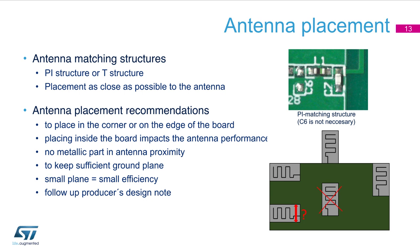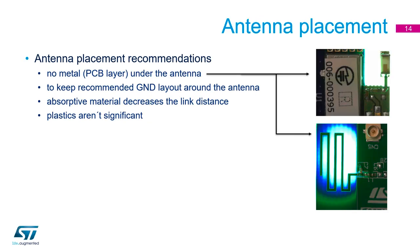A small ground plane or small PCB significantly impacts the efficiency of the antenna. It is best to keep the layout of the manufacturer. But be careful — under the antenna there must not be any metal, meaning PCB layers. Also, around the antenna space must be preserved for negligible impact. The antenna has to have enough space for radiation. Take care about absorptive materials close to the antenna, as they cause attenuation and decrease the range of the link. We always target to maximize radiated power.